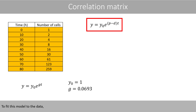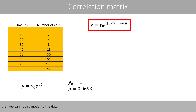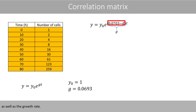To fit this model to the data, we can, for example, estimate how fast the cells divide in a separate experiment. Suppose that we estimated the cell division rate to 0.0703. Then we can fit this model to the data, where the death rate will be estimated, as well as the growth rate.